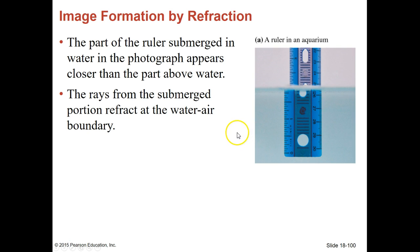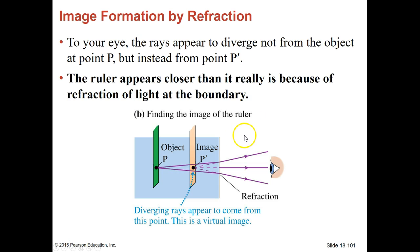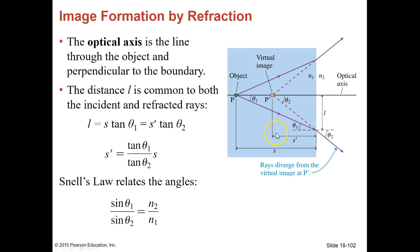You can try this in about anything that you want to — in a cup of water — and you would see the same thing. So to your eye, the rays appear to diverge not from the object, but instead from this point P here. The ruler appears closer than it really is because there's a refraction at the boundary.